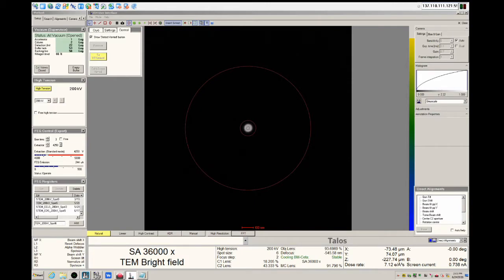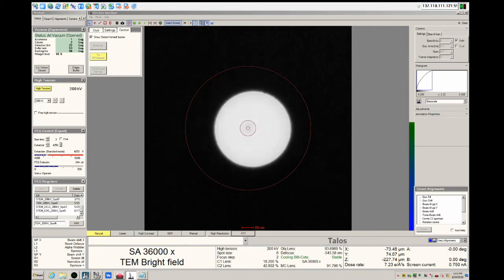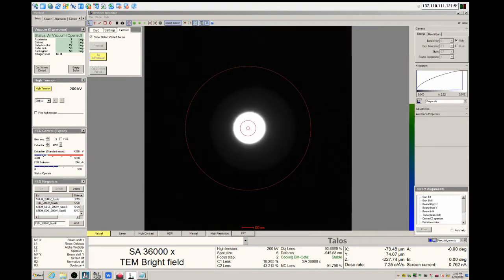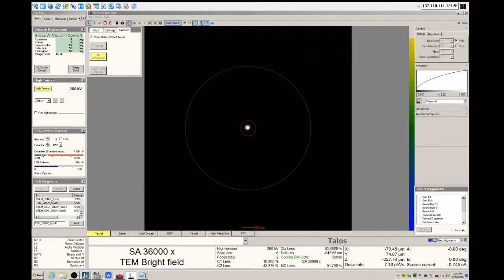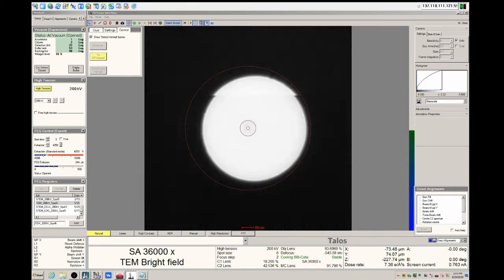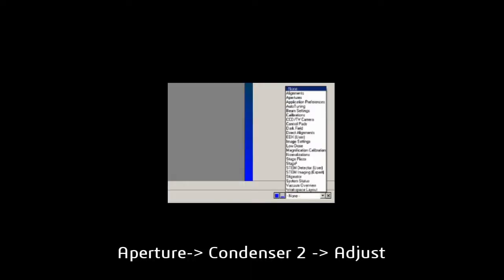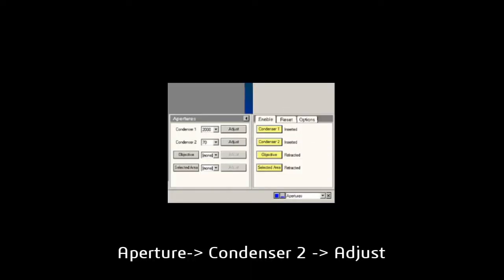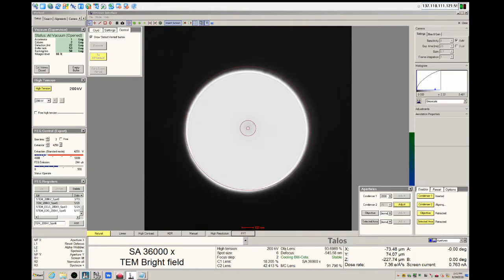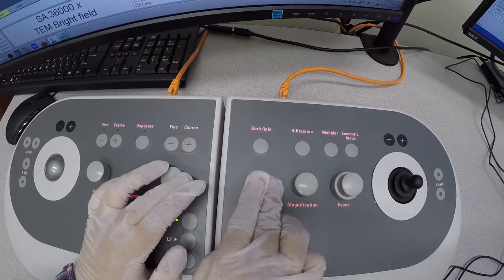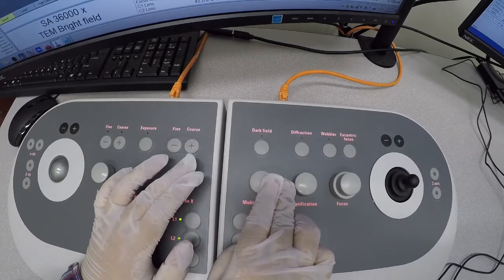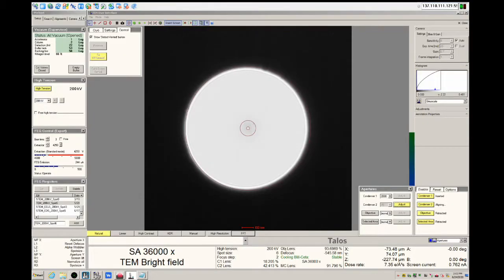The next alignment requires a larger spot, so increase the size of the spot with the intensity dial to be almost the size of the outer circle. Select apertures from the bottom right. We will be adjusting the alignment of the C2 condenser lens aperture. Never adjust the C1 aperture. The goal is to align the spot on the screen with the outer circle using the multifunction X and multifunction Y dials as before.